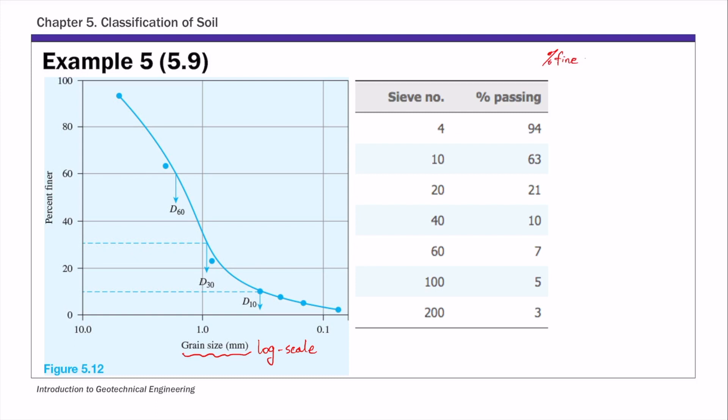So percent fine - you can actually use this sieve analysis table. That's the percent finer than number 200 sieve, so that's 3 percent. This percent passing simply means percent finer, it's the same thing. The percent fine is 3 percent.